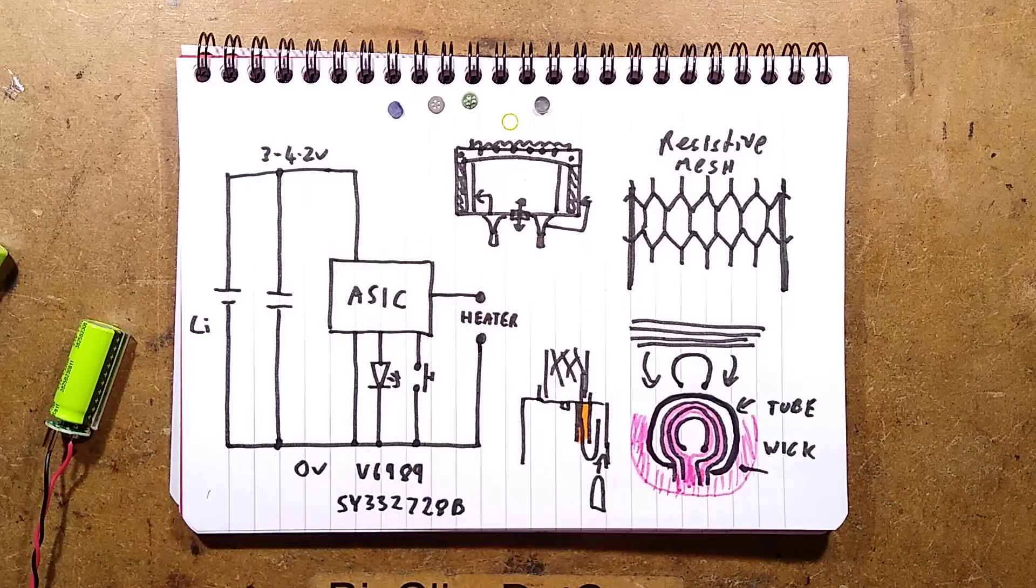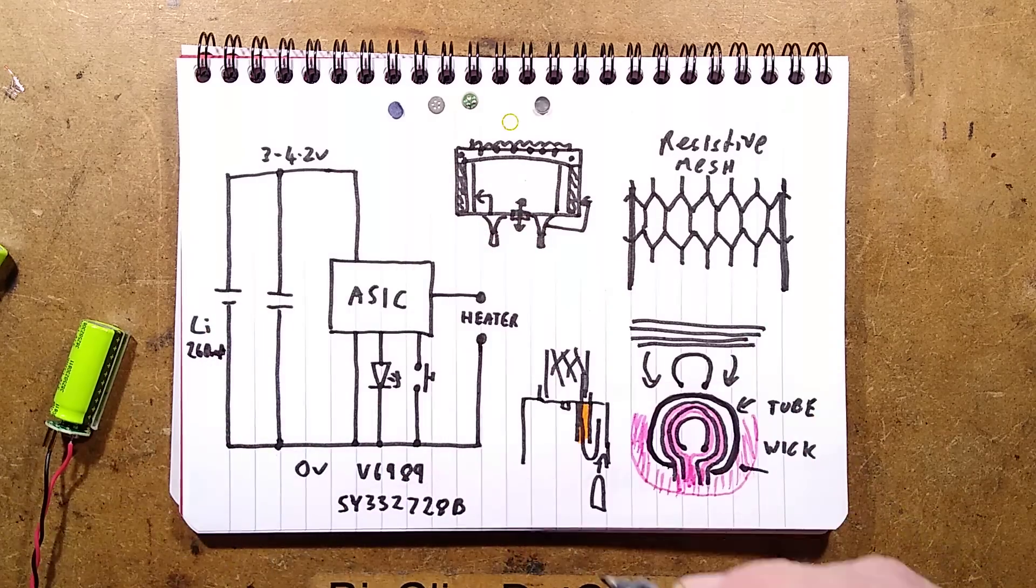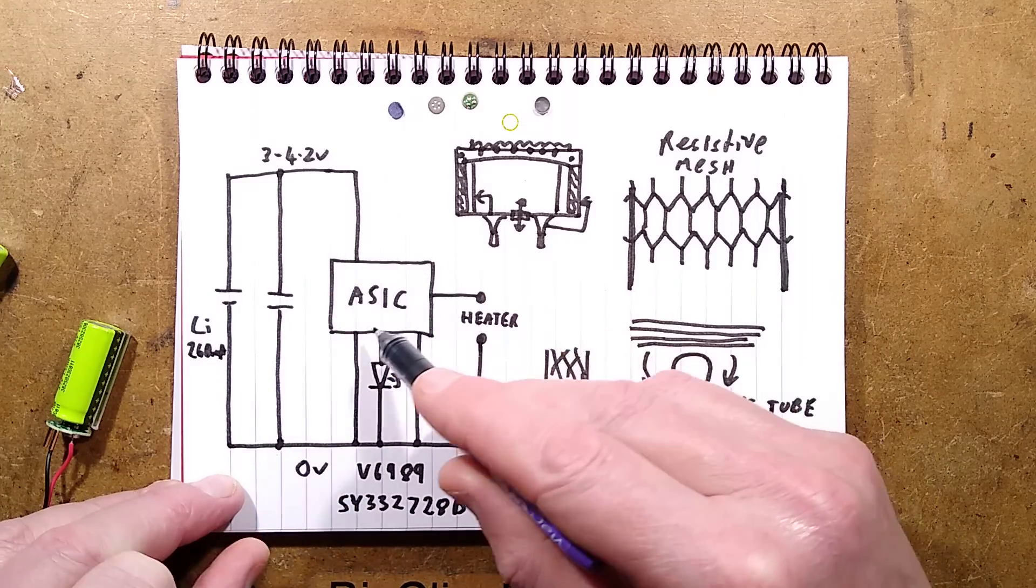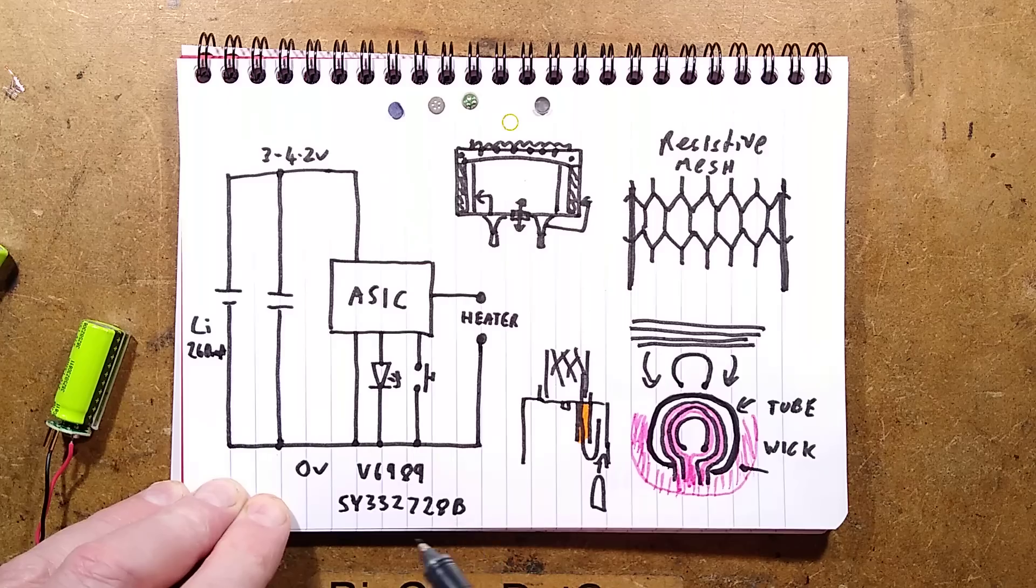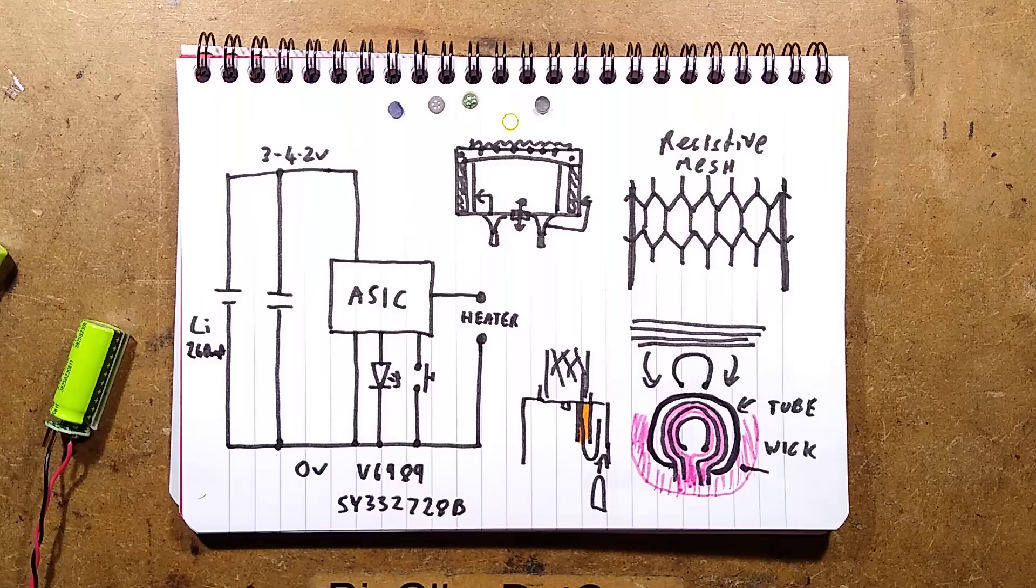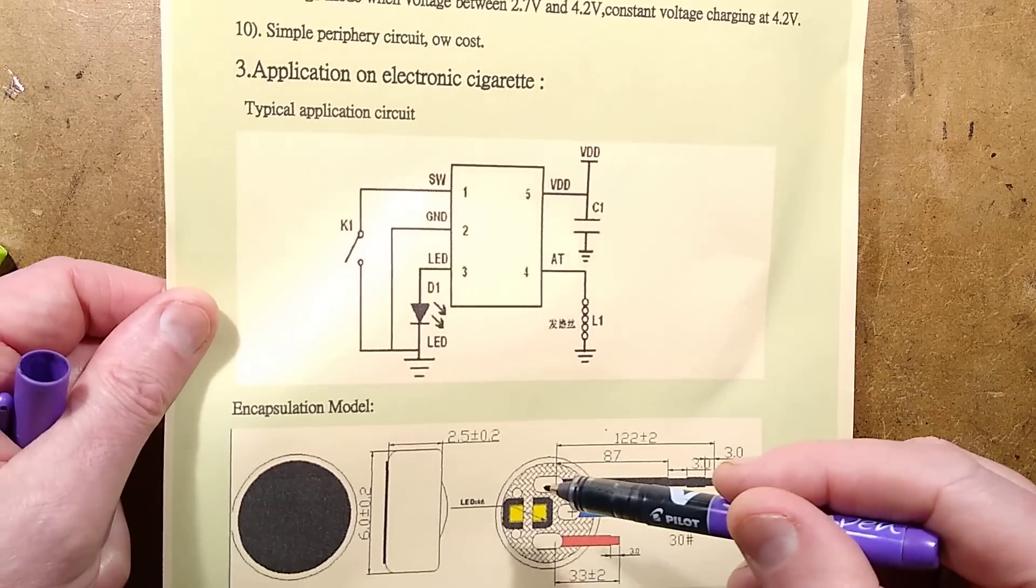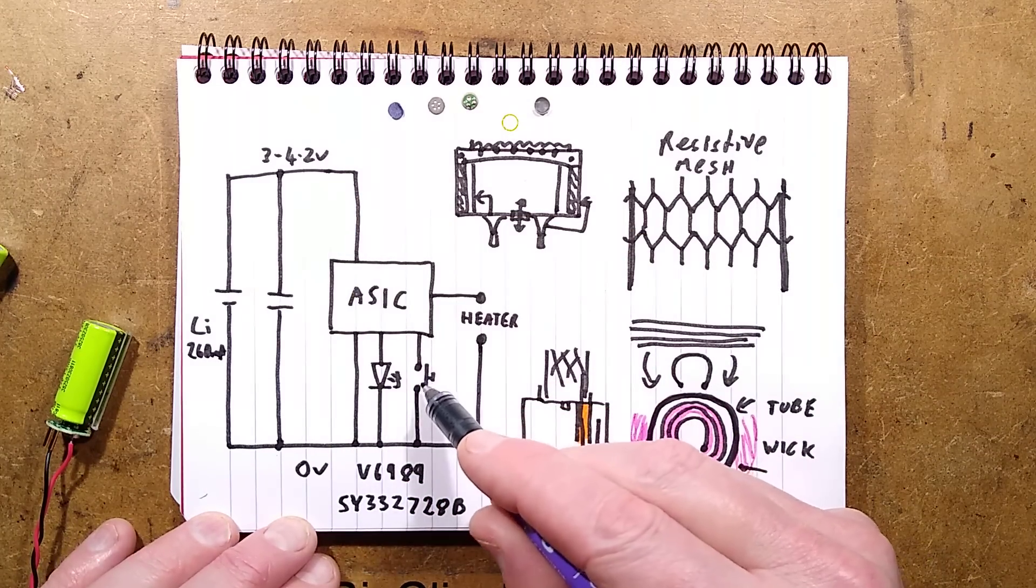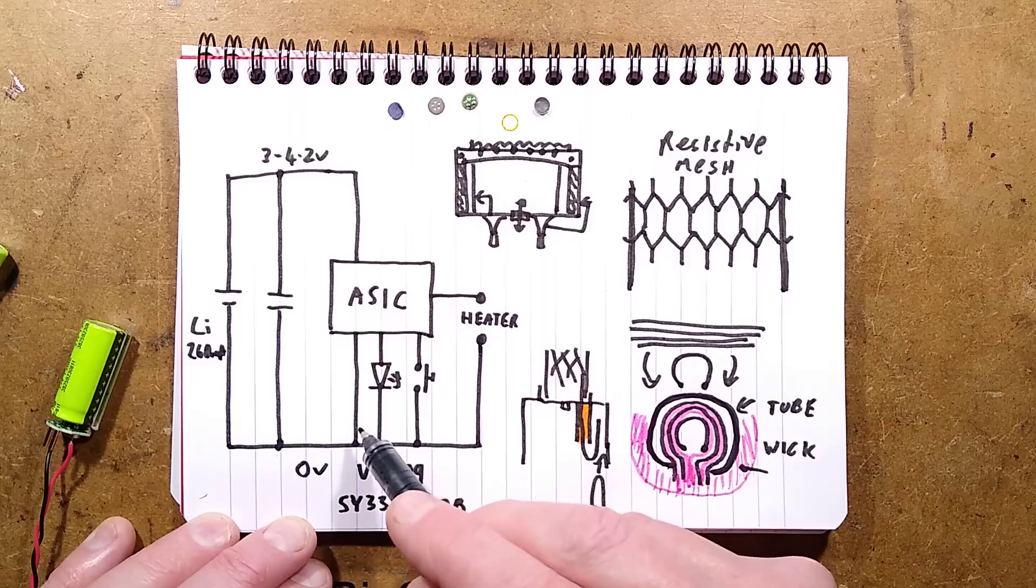Here's the application specific integrated circuit. Let's say it's actually 260 milliamp hour capacity, let's be generous. There's the lithium cell, the little decoupling capacitor to provide circuit stability, and the ASIC which is marked V6989 and underneath SY332728B. I've come across the SY number before, however I could not find a data sheet on it. However, it followed the standard pinout of vape devices. The inputs are just the switch representing the diaphragm. There are two outputs: one for the LED with built-in current limiting, and a high current output to the heater.